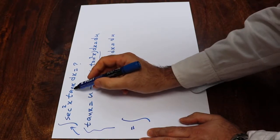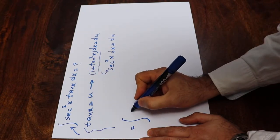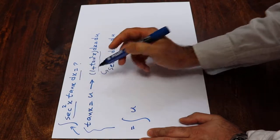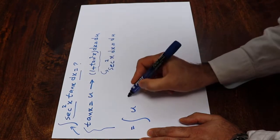you will get instead of tangent x, I write u, and instead of secant squared x dx, I write du.